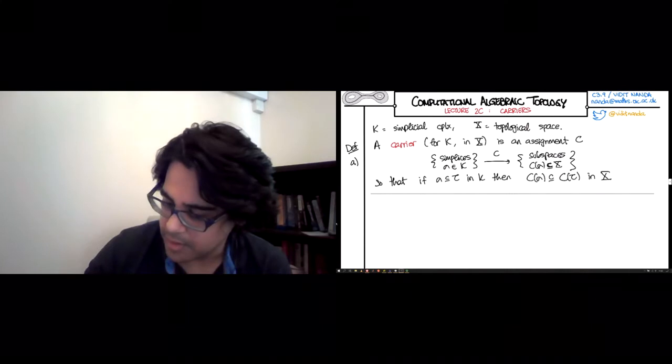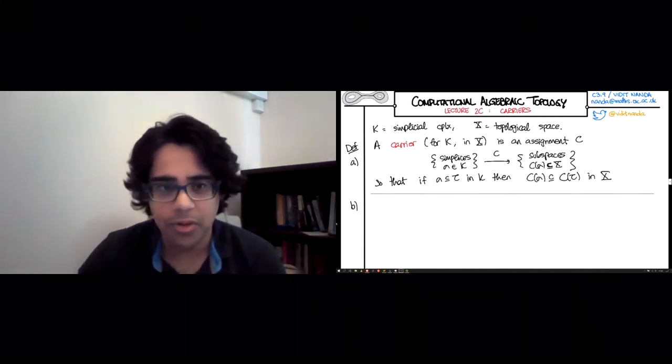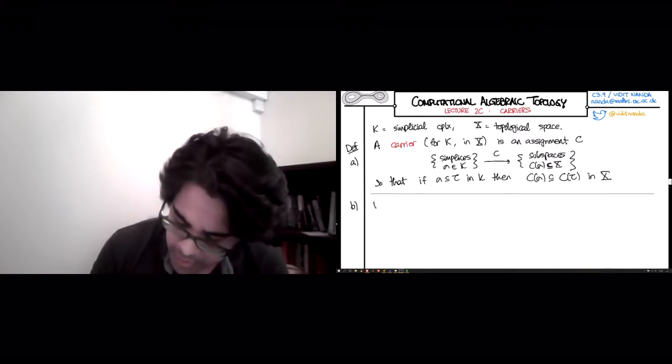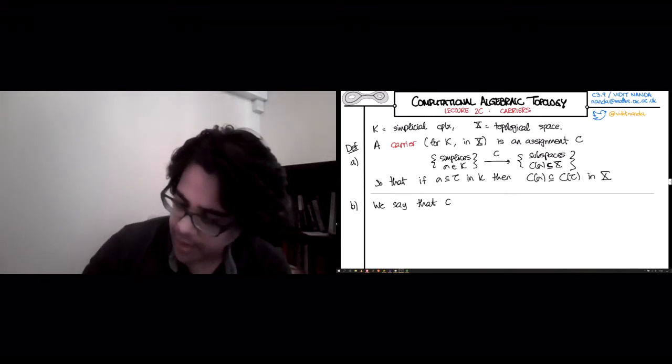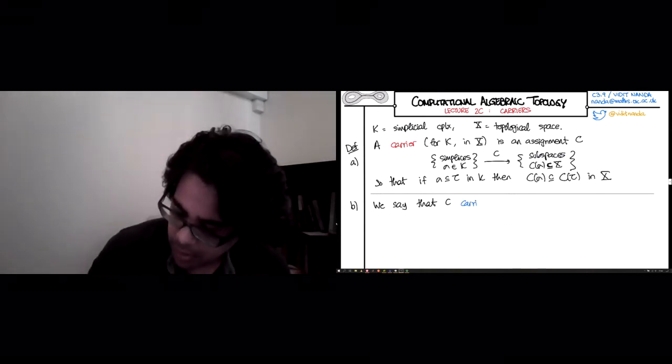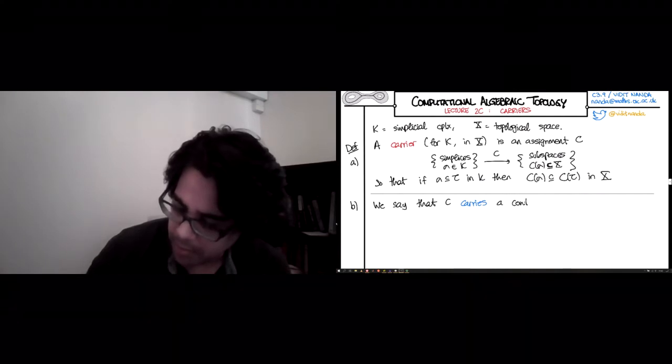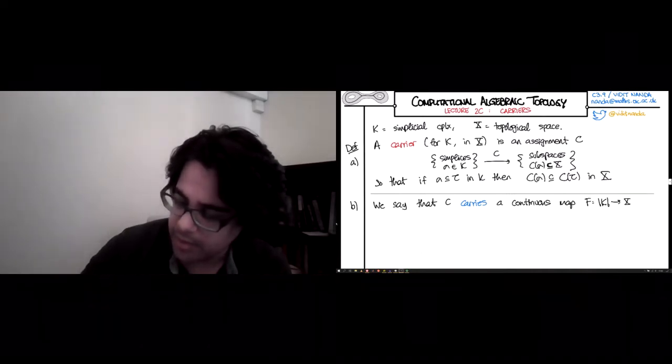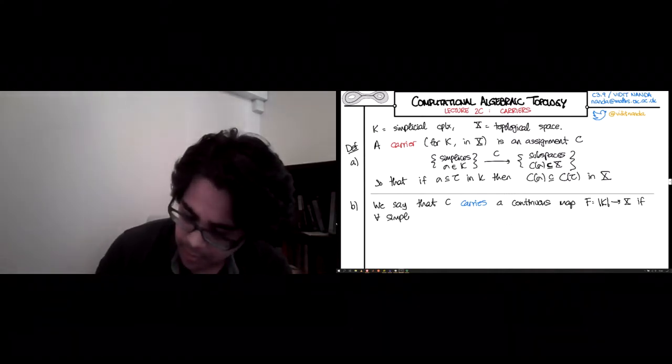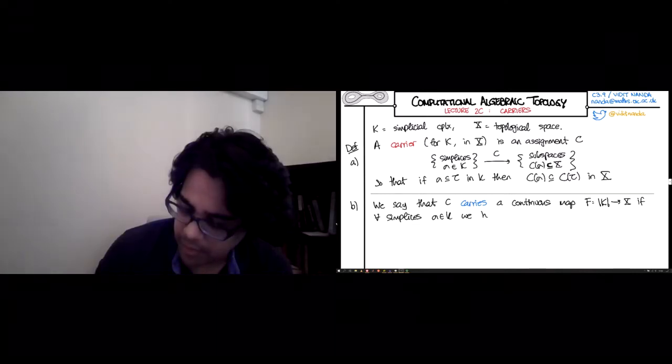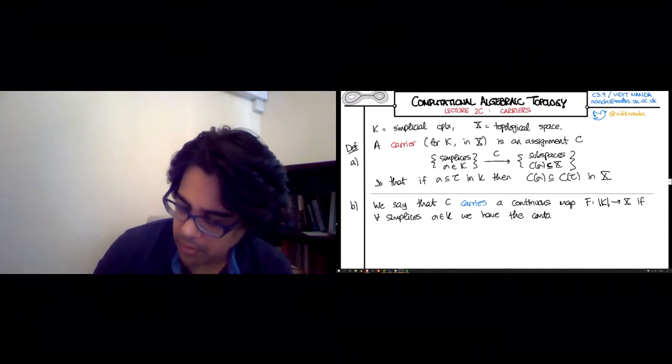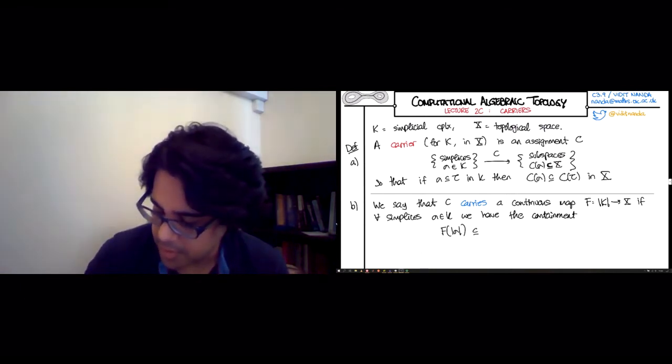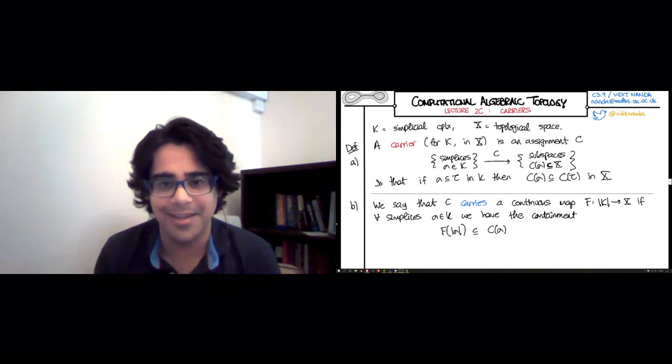And for our purposes, it's important to see how this definition relates with things we already know, like continuous maps and simplicial maps. We say that C carries a map, a continuous map, let's say f from the geometric realization of K to X, if for all simplices sigma in K, we have the inclusion or the containment: the f image of the realization of that simplex sigma must be a subset of whatever C has decided sigma gets.